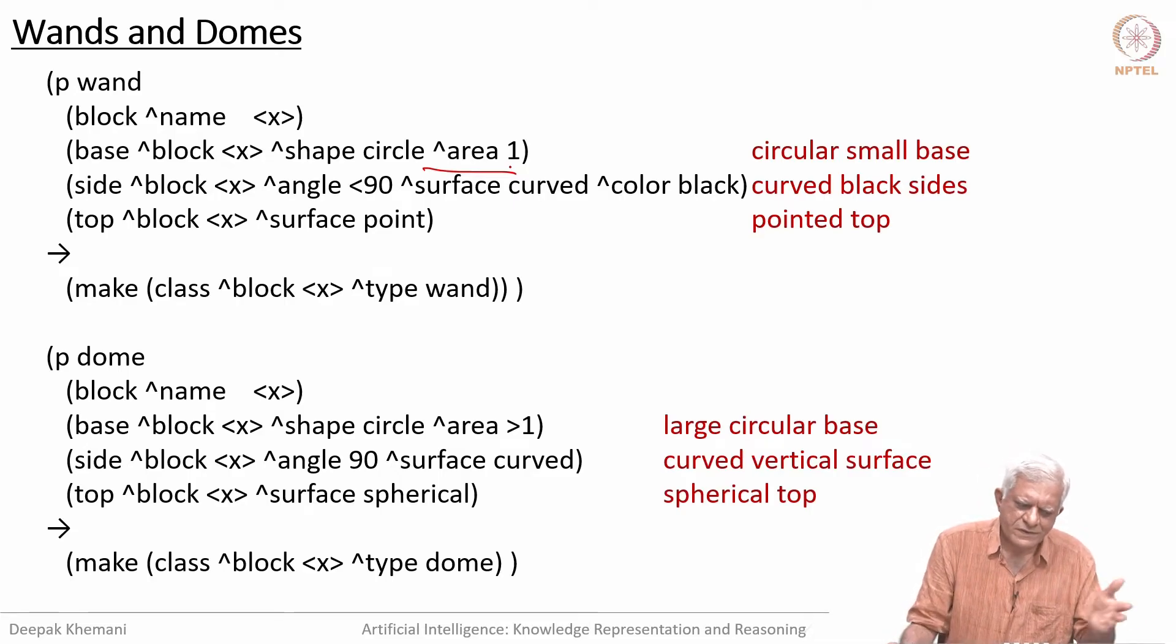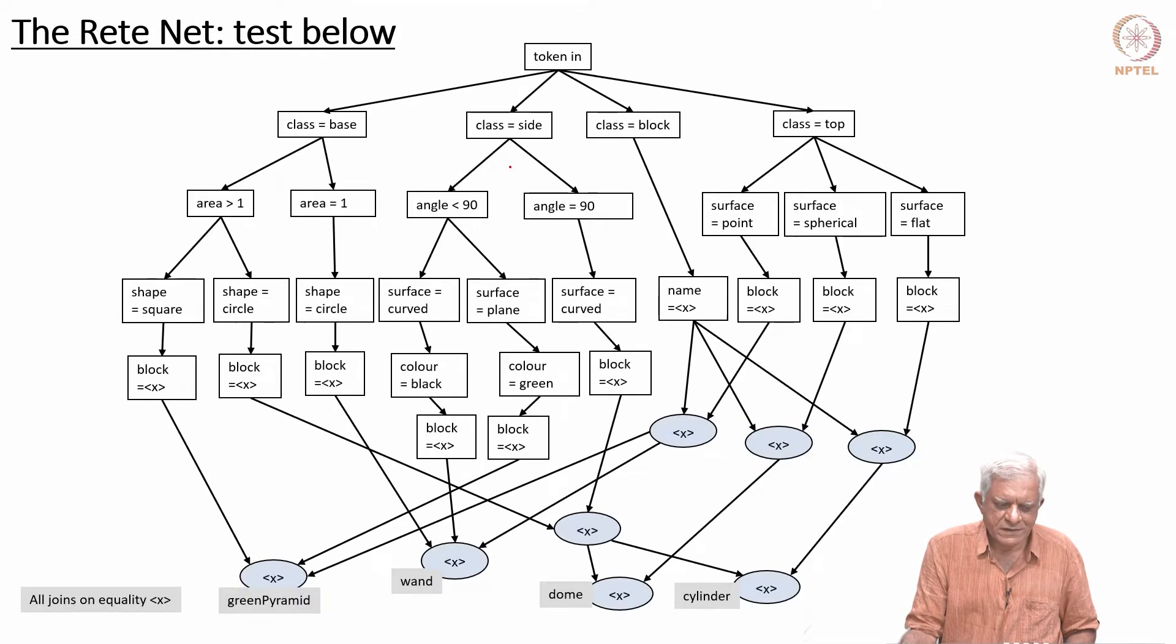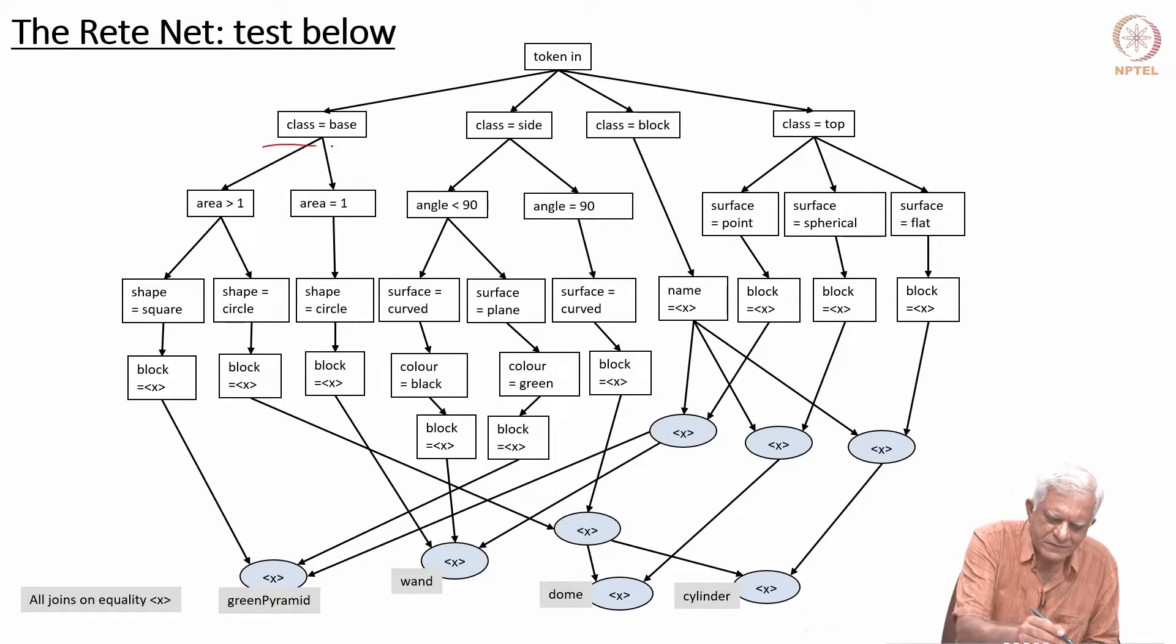We saw a small example of a rule-based system with four rules defining pyramids, wands, domes, and cylinders with some color. Let us see how the Rete network looks for this set of rules. Here is the network where we have shown the test to be below, which means we are testing the value of that attribute. For example, the class is the base, the class is the side, the class is the block, and as we go down, we look at values of attributes and the test essentially.